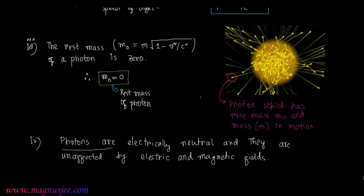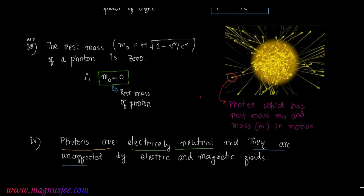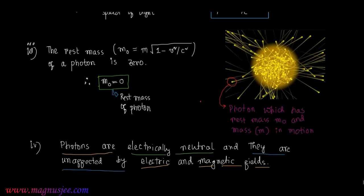Property 5: Photons are electrically neutral, and they are unaffected by electric and magnetic fields.